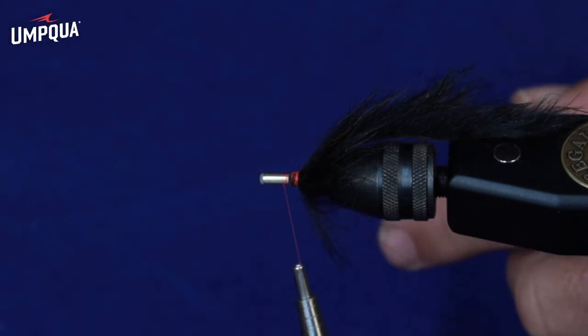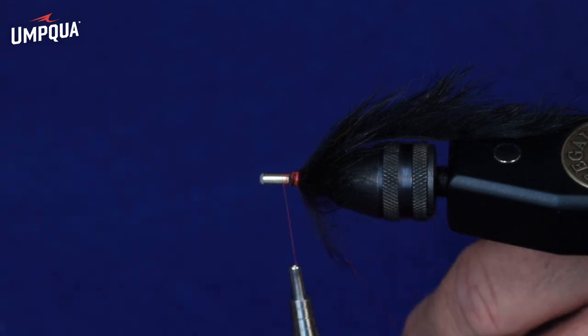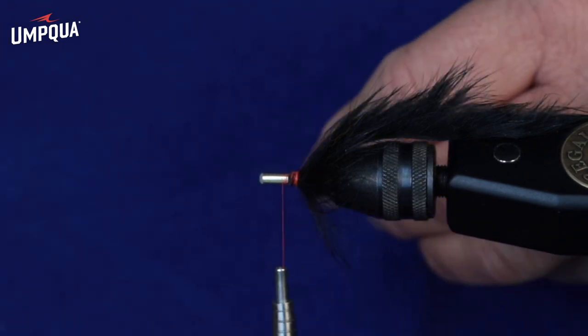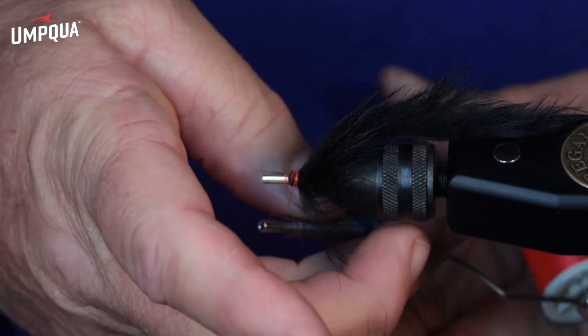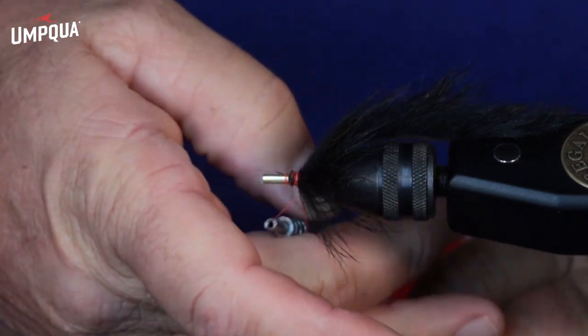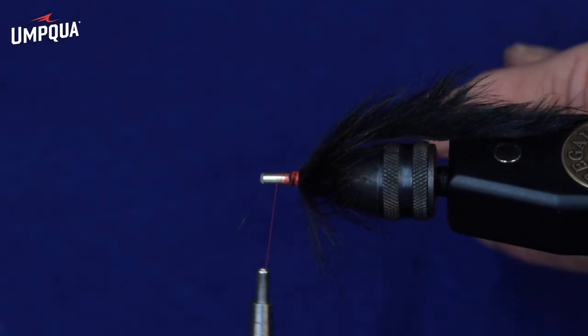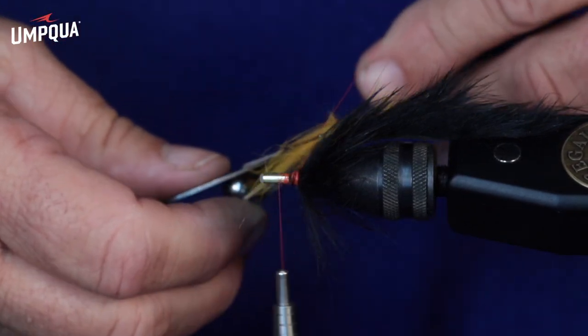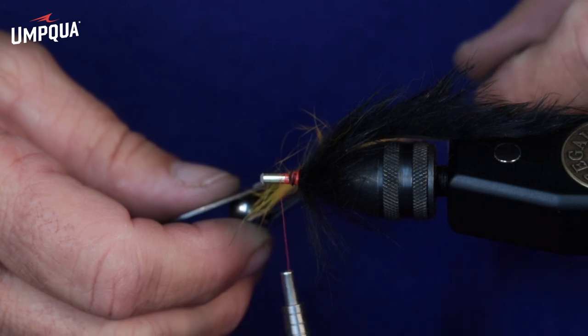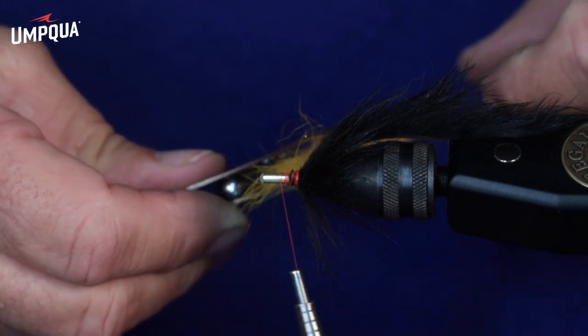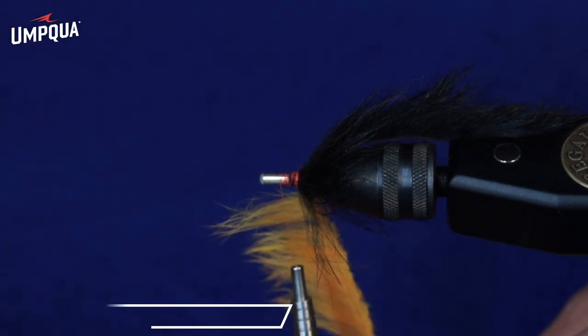And then I'm going to insert that rabbit right in the loop. So, I've got my dubbing twister, and got my loop ready, and I'm just going to insert the rabbit, and then give it a spin.